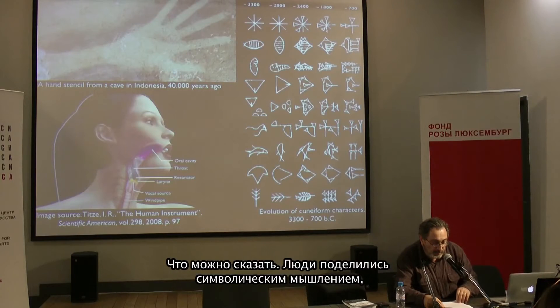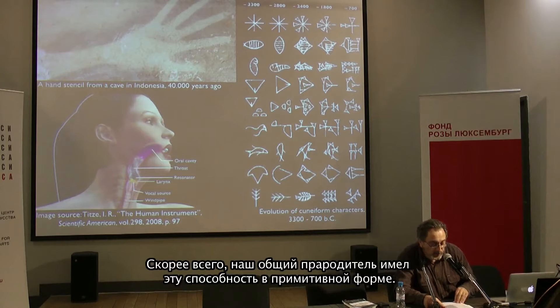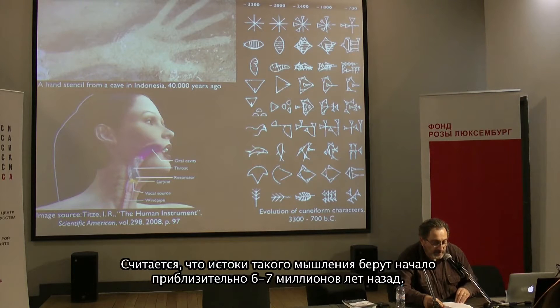When the symbolic ability acquisition was born is mostly considered an inappropriate question by anthropologists, because before the use of images, it is only possible to refer to anatomic comparisons. What can be said is that since humans share the symbolic ability, also in a minor part, with primates like the chimpanzee, most probably our common progenitor had this ability in a primitive form — estimating its early roots very approximately to 6–7 million years ago.